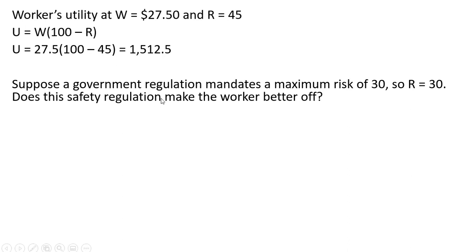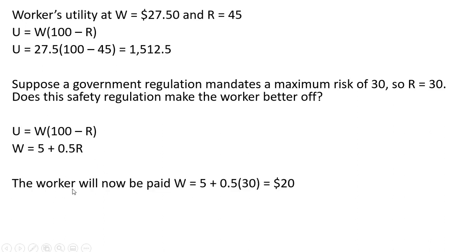Let's suppose a government regulation mandates a maximum risk of 30. Does this safety regulation make the worker better off? Here's our utility function, here's our hedonic wage function. If the most risk that this worker can take is 30, this worker will now be only earning $20 an hour.